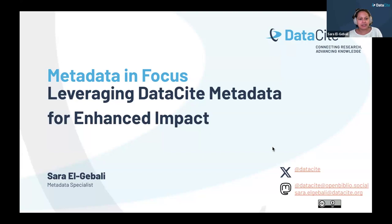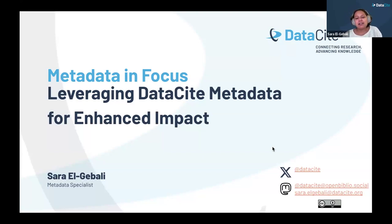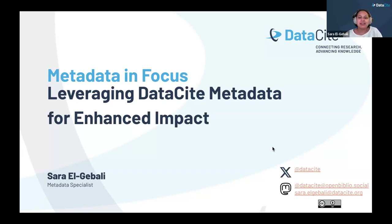In this first part, we will showcase some of the DOI metadata metrics and show how these can be used as tools to support informed or strategic decision-making. It will highlight the importance of metadata quality and completeness, and how we can leverage this metadata to support researchers and institutions in enhancing research impact and alignment with the FAIR principles.